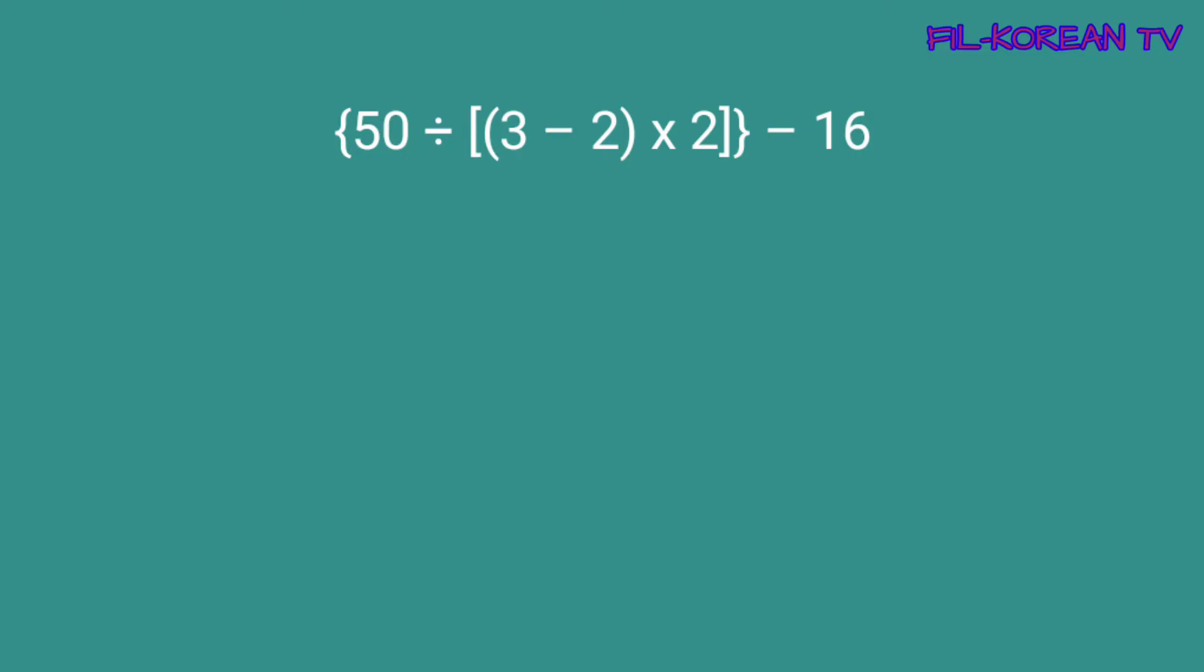Okay, isolve natin itong problem. Unahin natin sa pag-solve itong nasa loob ng parenteses. I-minus natin ang 3 minus 2. 3 minus 2 equals 1. Okay, next, itong nasa loob ng brackets, ang kukunin natin ang answer. 1 times 2 equals 2. Then, ito na yung nasa loob ng brackets, ang kukunin natin ang answer. 50 divided by 2. 50 divided by 2 equals 25.